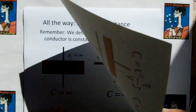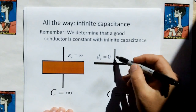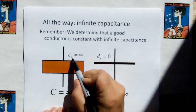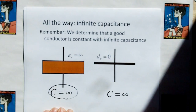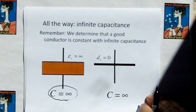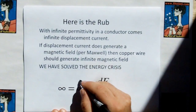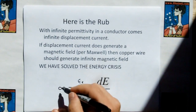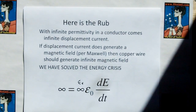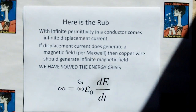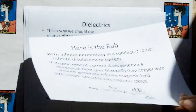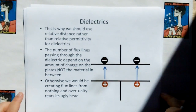What if we bring copper all the way — filling the entire gap? That would be the same as shorting the plates, giving us a relative permittivity of infinity, which gives us infinite capacitance. This fits with the earlier discussion of what kind of capacitor would transmit DC without blocking it. But here's the rub: now that we have a relative permittivity of infinity, we put it back into our displacement current equation and we get infinite displacement current. So now we have solved the energy crisis — all we need to do is build a capacitor with a copper dielectric. This is obviously ridiculous.